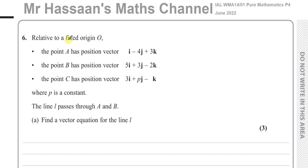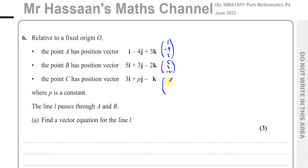We're told that relative to a fixed origin O, the point A has position vector i minus 4j plus 3k, which I'll write as the column vector (1, -4, 3). Point B has position vector 5i plus 3j minus 2k, that's (5, 3, -2), and point C has position vector 3i plus pj minus k, so (3, p, -1), where p is a constant.